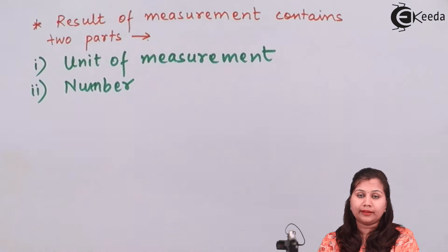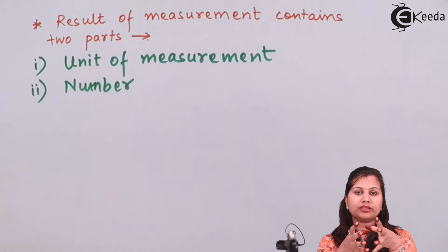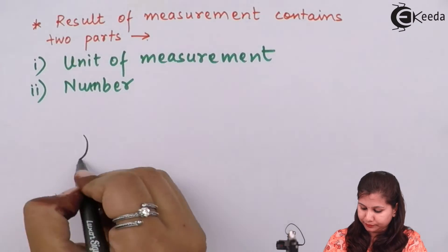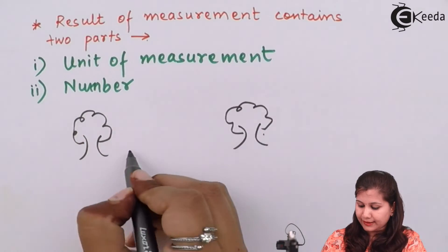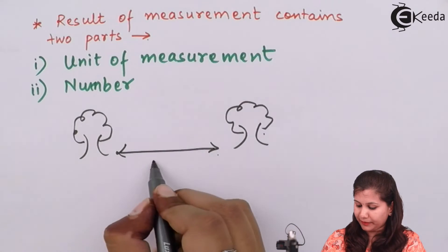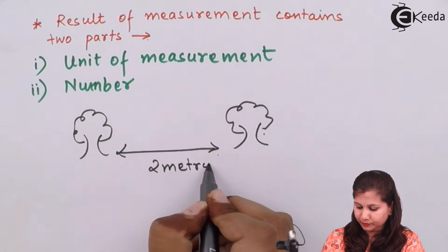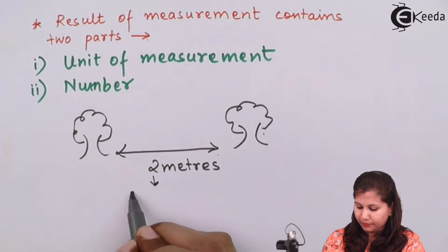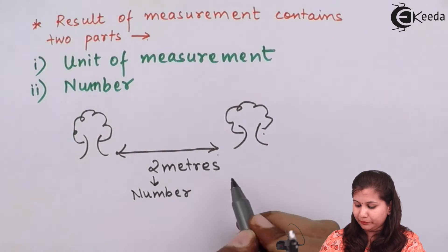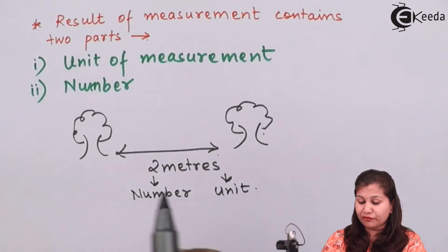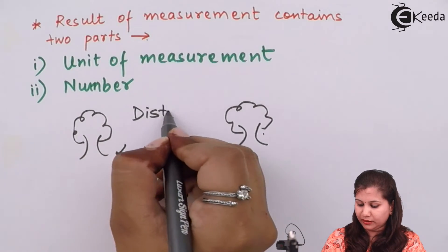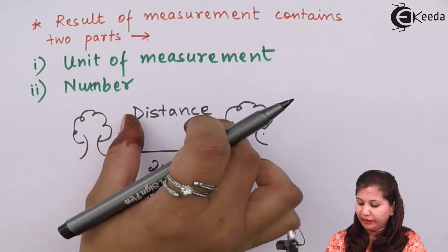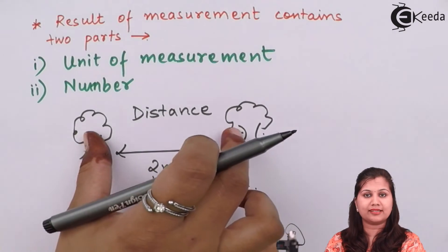Let's take an example. Suppose we want to measure the distance between two trees, and that distance comes out to be two meters. So 'two' is the number and 'meters' is the unit. What we are measuring — the distance between the two trees — is the property, and we define it as two meters.